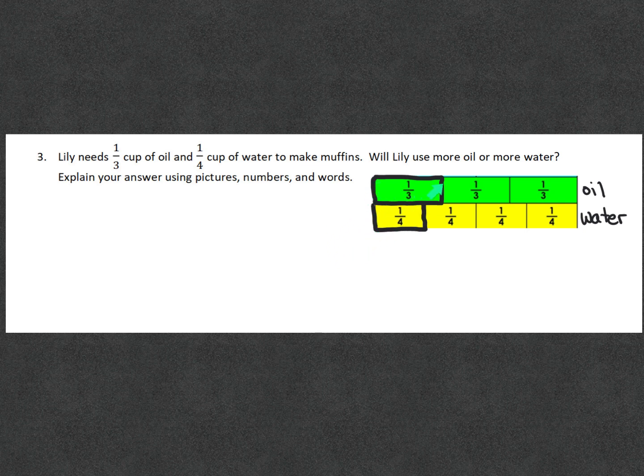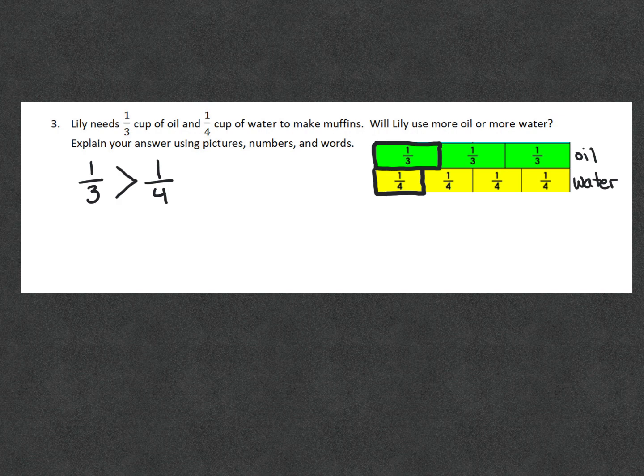One third plus one third plus one third is one whole or three thirds. One fourth plus one fourth plus one fourth plus one fourth is another whole or four fourths. One third plus one third has a bigger box than the one fourth. So one third is greater than one fourth.